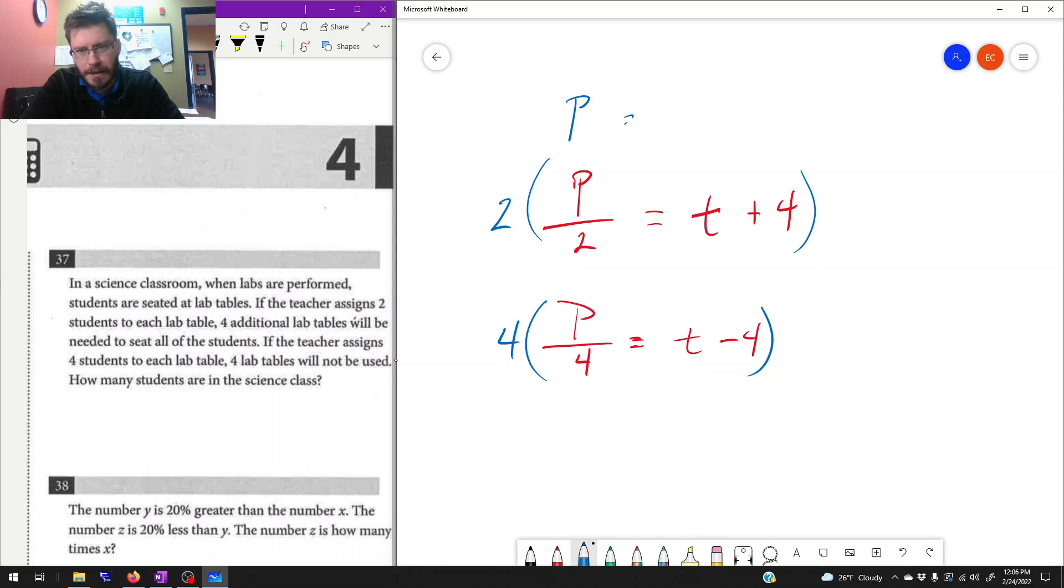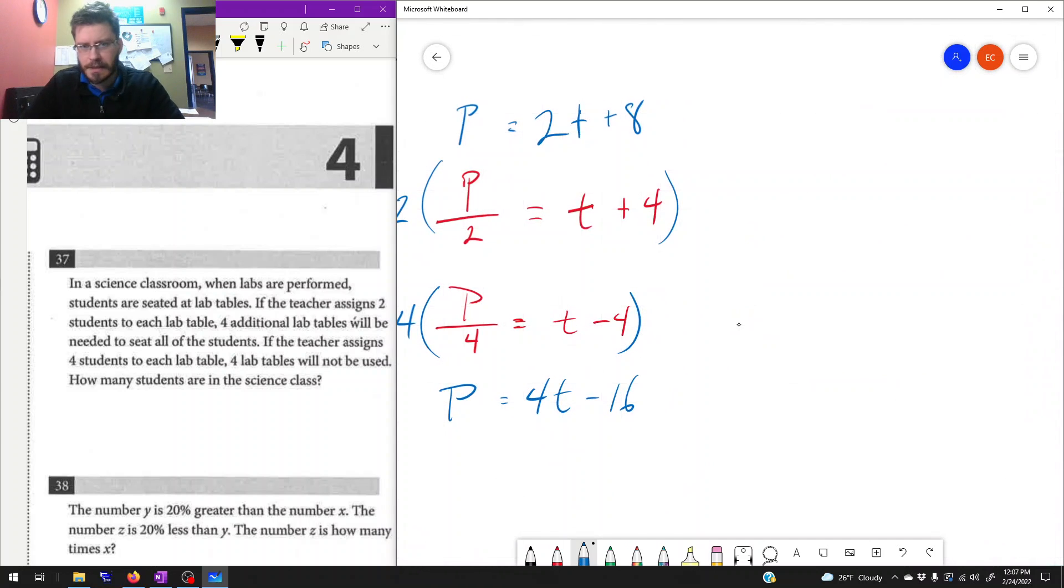Two times P over two is P. Everything gets multiplied, so that becomes two t and eight. This one becomes P, four t, and 16, and those numbers are much easier to work with. So let's translate that over here. P equals two t plus eight. P equals four t minus 16. And this is much simpler to look at.